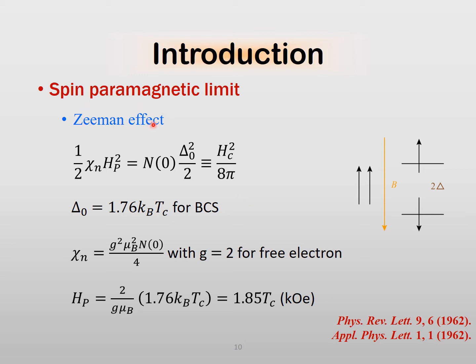The Zeeman effect can cause spin polarization, thereby resulting in a spin singlet to spin triplet transition. In this case, Cooper pairs can be broken. As I mentioned earlier, the gap is given by 1.76 times Kb times Tc. If we plug in the g-factor and the Bohr magneton, we can see that the paramagnetic limit is given by 1.85 times Tc in Kilo Oersted, KOE.